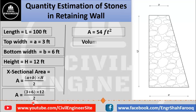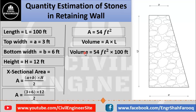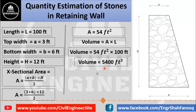The next step is to calculate the volume of the retaining wall. Volume is equal to cross-sectional area multiplied by length. Putting in values: Volume = 54 square feet × 100 feet. After simple calculation, the volume of the retaining wall is 5400 cubic feet. This is the volume of stones we need to construct this retaining wall.